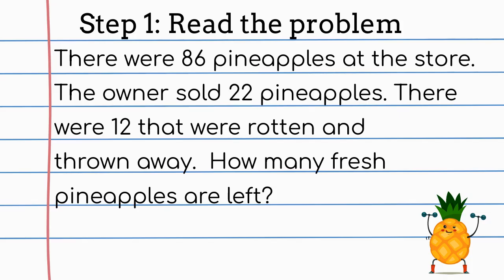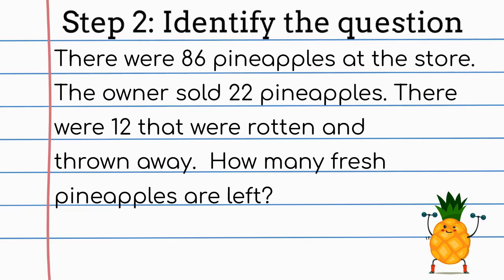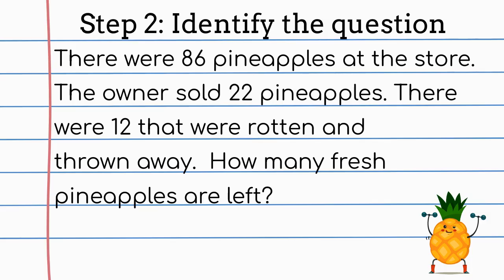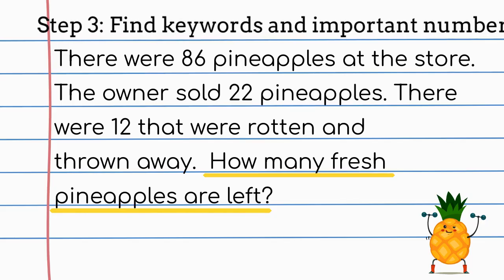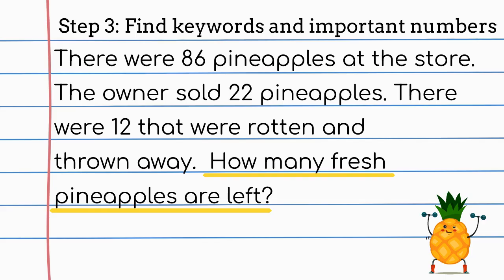Let's try one together. Read the problem with me. There were 86 pineapples at the store. The owner sold 22 pineapples. There were 12 that were rotten and thrown away. How many fresh pineapples are left? We've read our problem. Now let's go on to our next step. What is this problem asking us to find out? That's right. We are trying to find out how many pineapples are left at the store. Let's move on to find some keywords and important numbers. We know we're solving multi-step problems, so we want to stop when we've found two numbers that we can create an equation with.